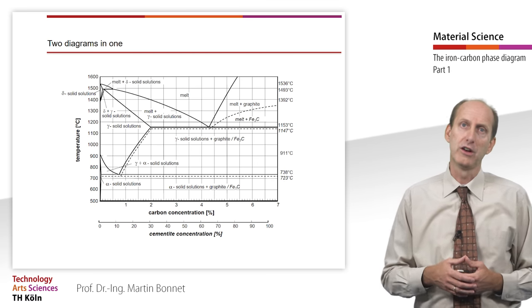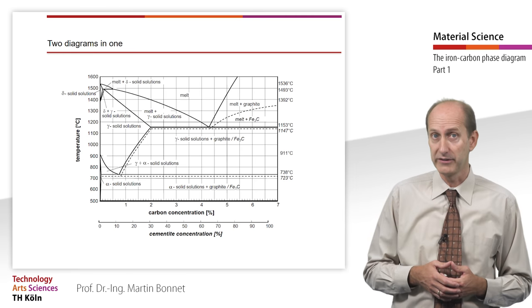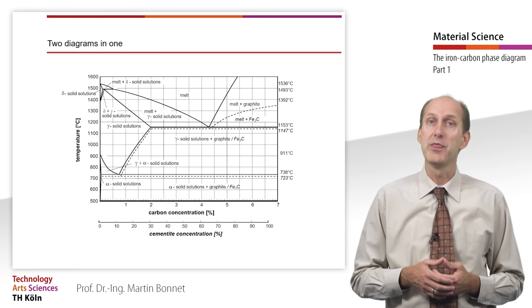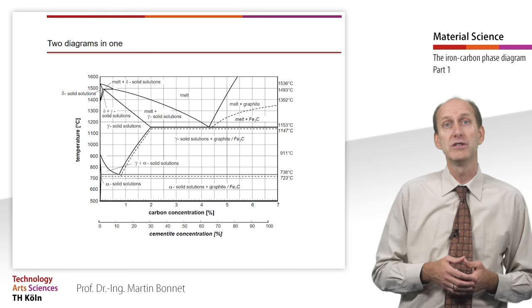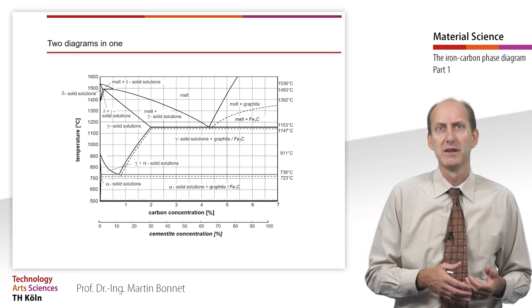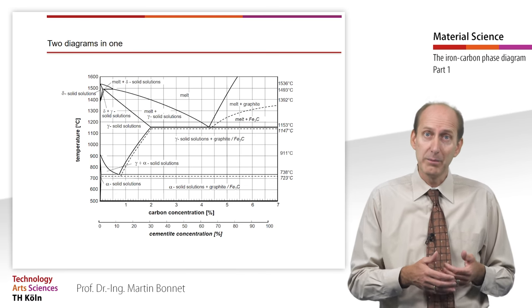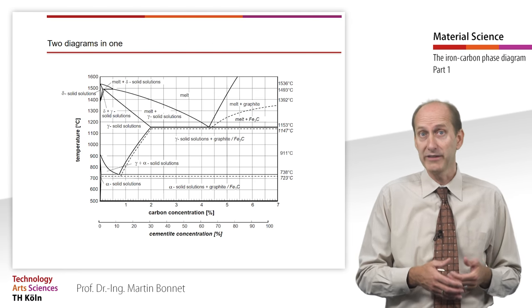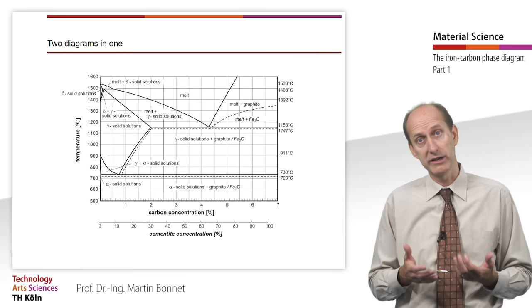Most ferrous alloys used in engineering contain other alloying elements alongside carbon, which may significantly change the properties and the microstructure. As a result, the temperature-dependent structural changes, the proportions, and the structure types cannot be reliably determined from the iron-carbon phase diagram. Nonetheless, the iron-carbon phase diagram can provide some important and general insights.